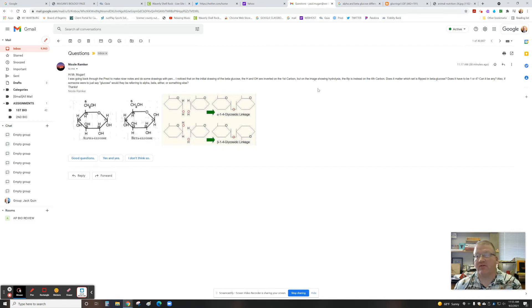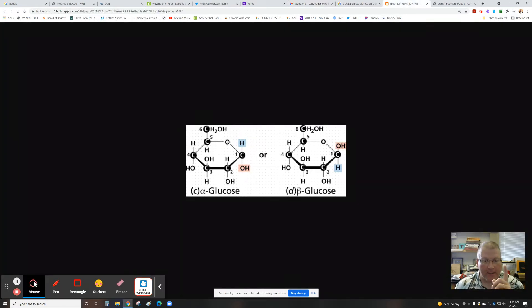First of all, those are typically shown on the first and fourth carbons. Here is what you're seeing on the first carbon.